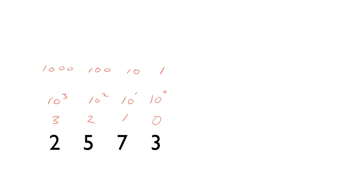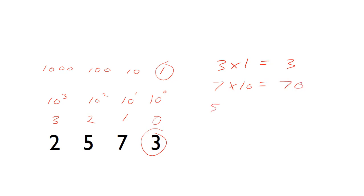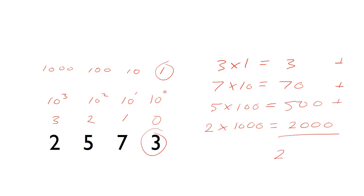To work out the value of a number, it's just a case of multiplying the actual digit by the weight: three times one gives three, seven times ten gives seventy, five times a hundred gives five hundred, and two times a thousand gives two thousand. Adding all these numbers up gives us two thousand, five hundred and seventy-three.